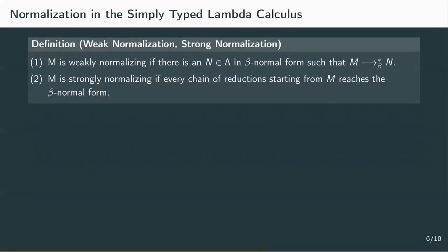A term is strongly normalizing if, no matter in which order we reduce a term, we always reach the normal form of the term, which is the point where it can't be reduced any further.